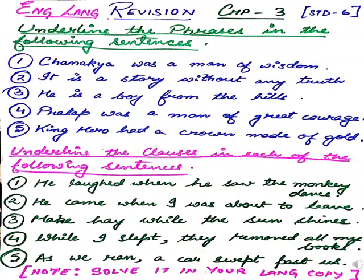So now, what are phrases? Words which make sense but not complete sense is called a phrase. And what is a clause? A group of words which form part of a sentence and it contains a subject and a predicate — that is called a clause.